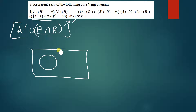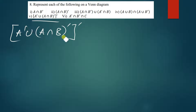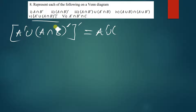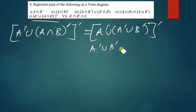Let's first simplify the expression. We have (A complement union (A intersection B)) complement. Simplifying the brackets using De Morgan's law, we get A complement union (A complement union B complement), giving us A complement union A complement, which is just A complement union B complement.